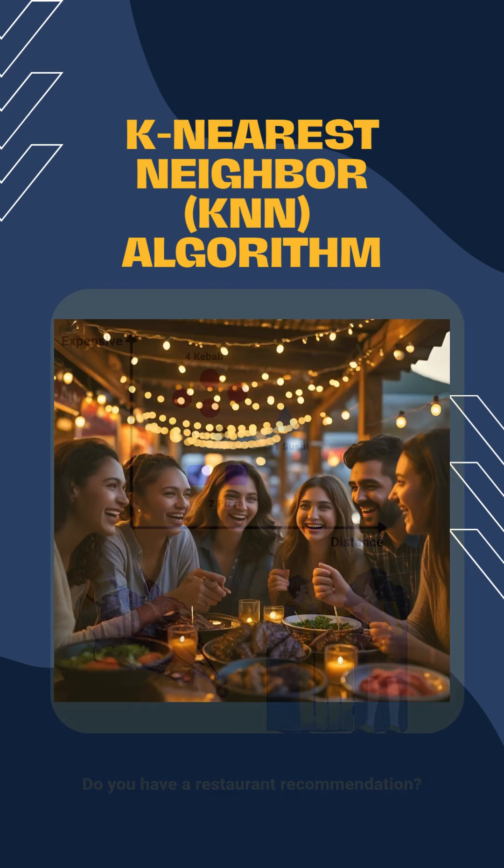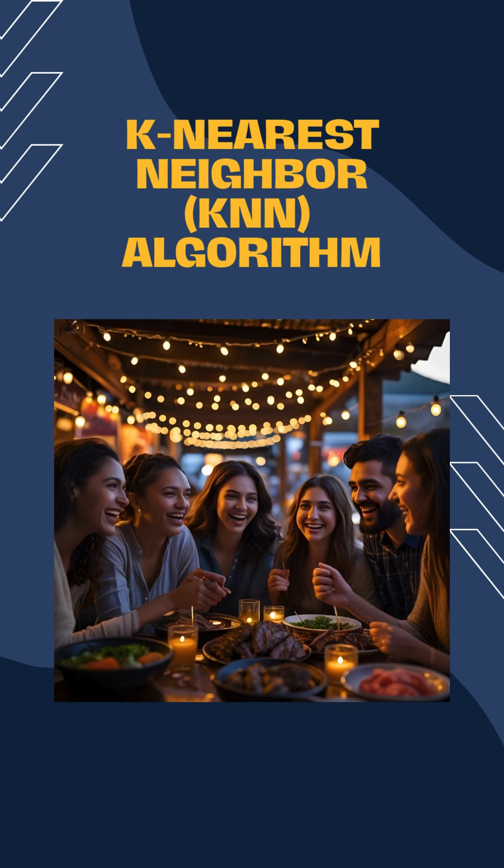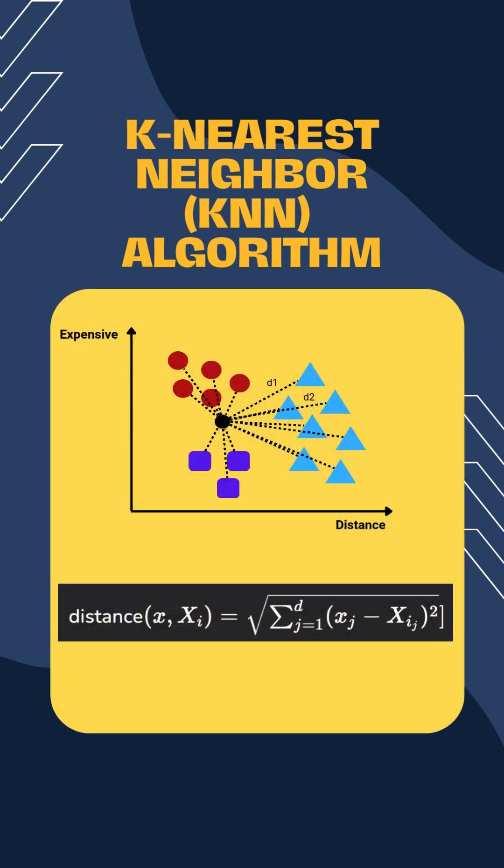The K is a number you choose, usually odd to break ties. Distance is often calculated using Euclidean distance.